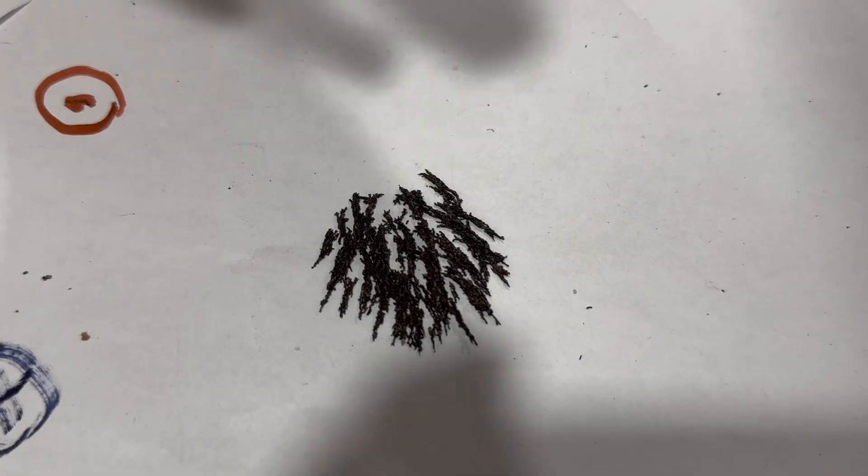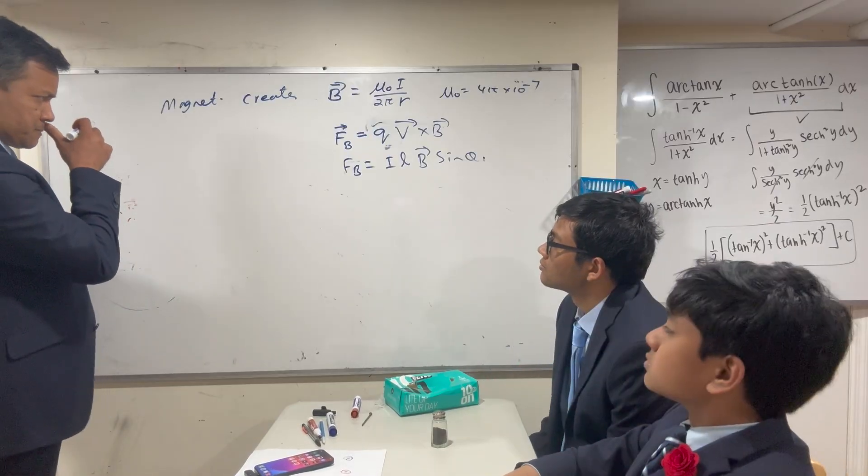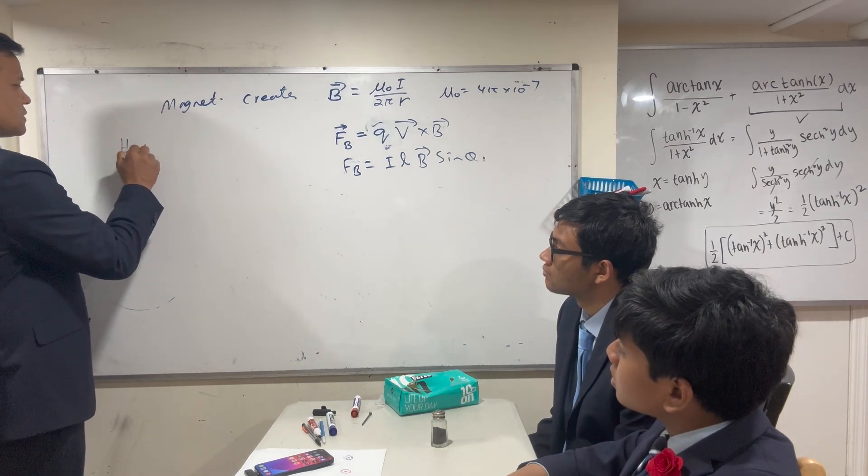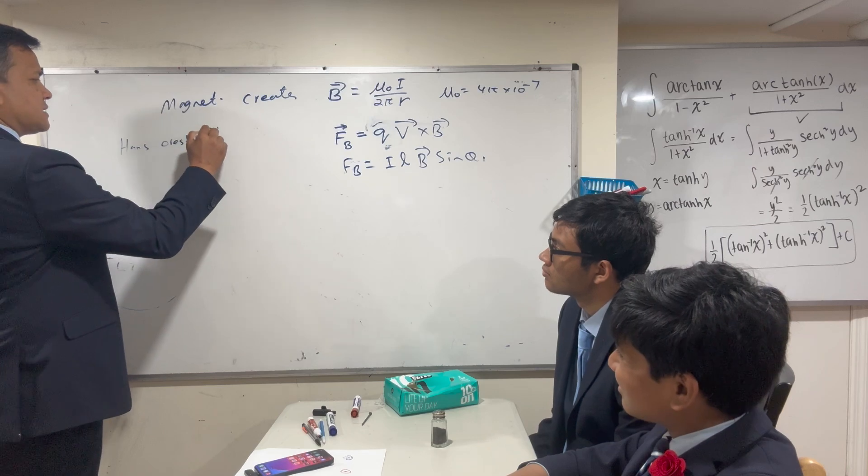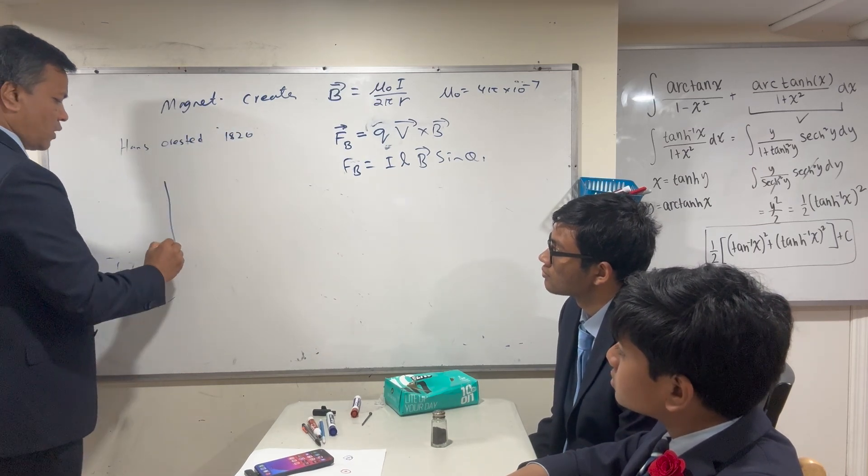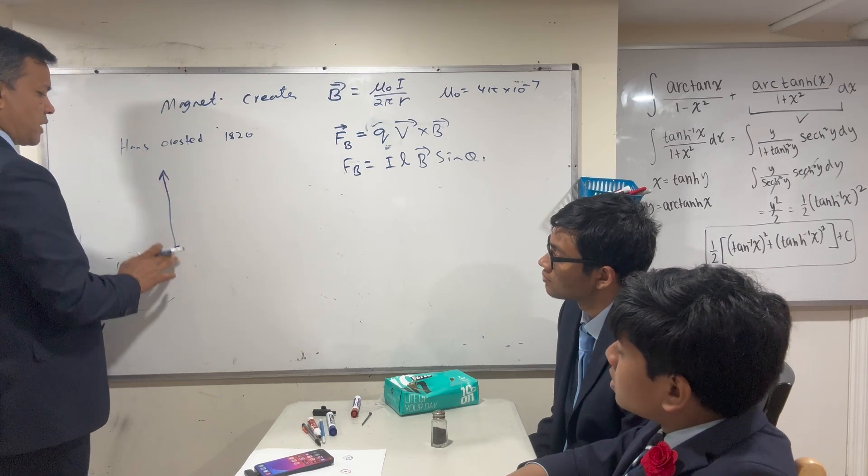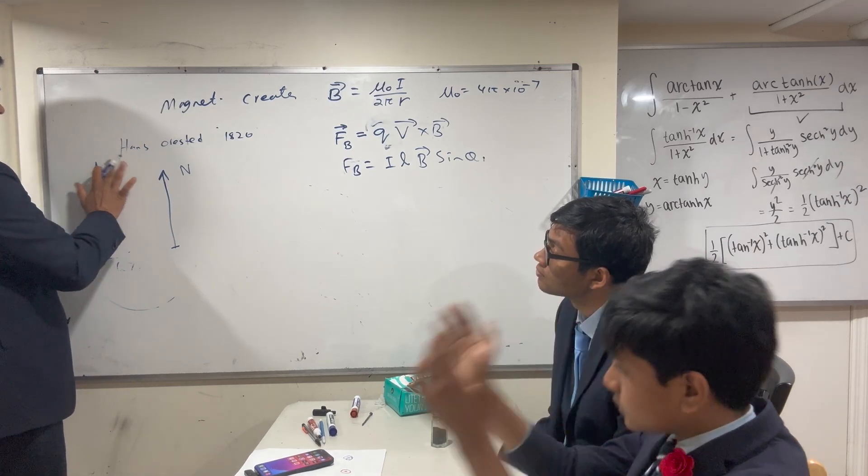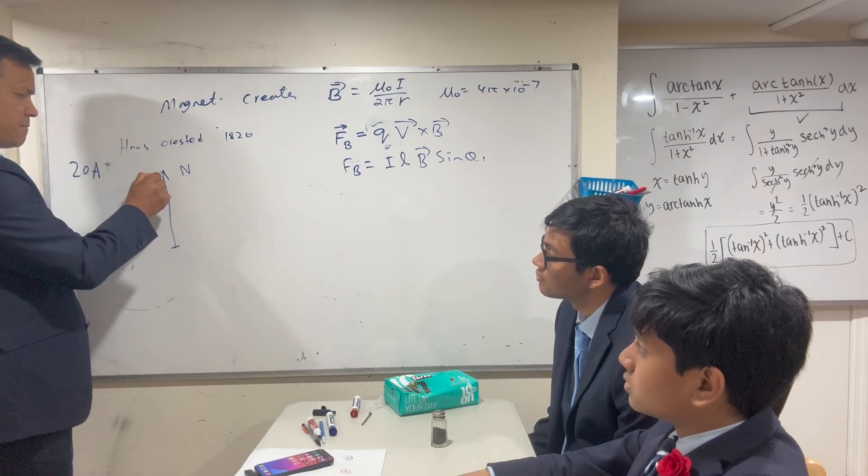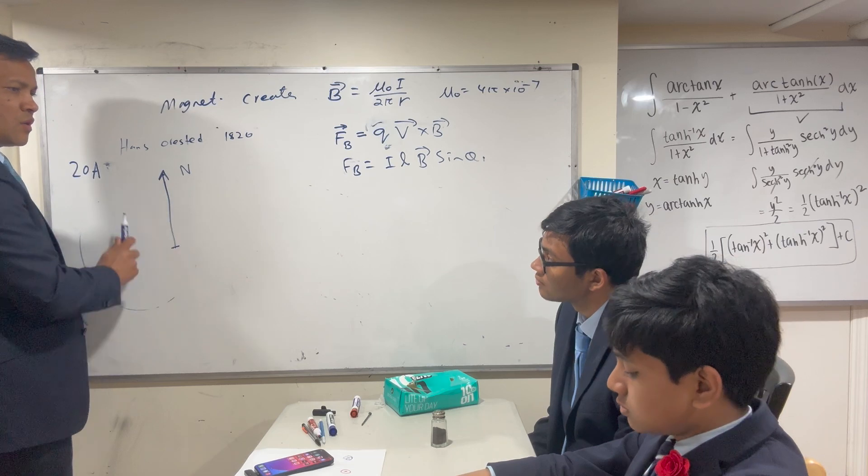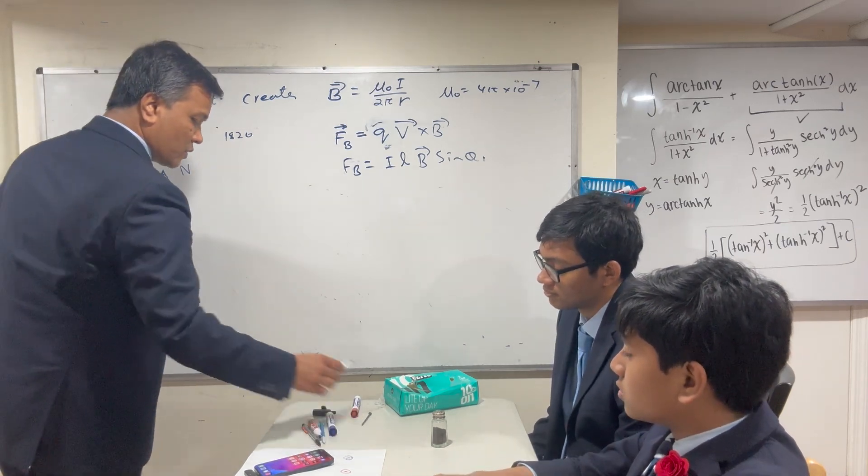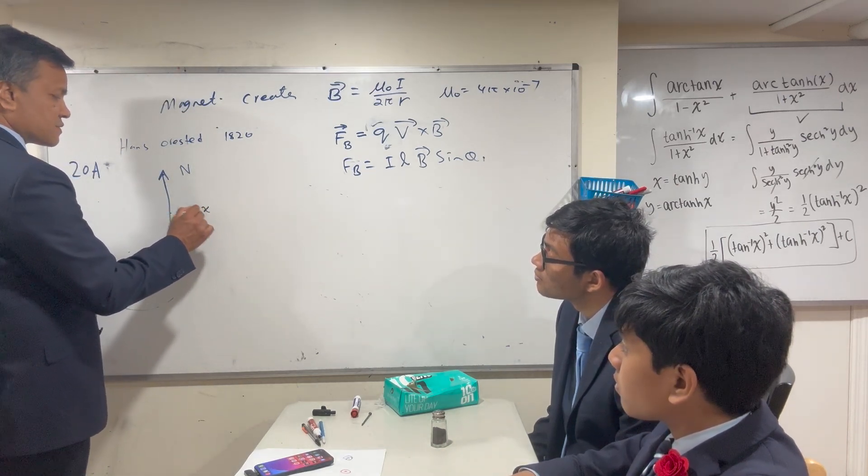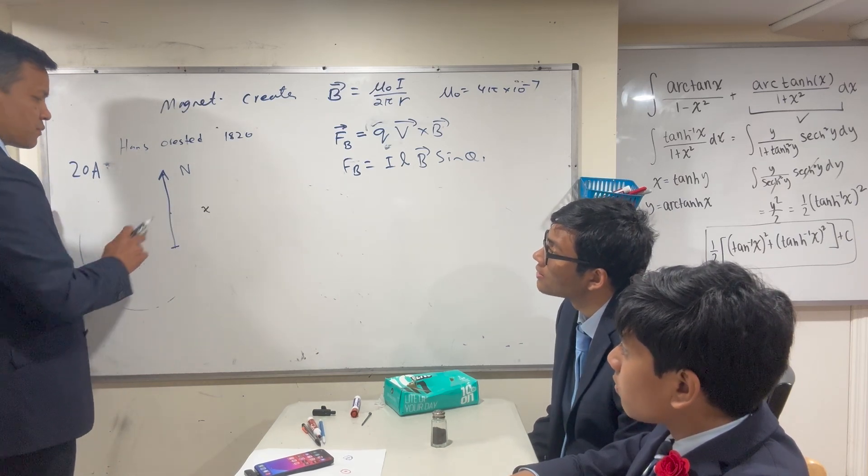Let's talk about the magnetic field. Oersted, 1820. What did he discover? A current-carrying wire—let's say the wire carries 20 amps—creates a magnetic field around the wire. We're going to try to find the magnetic field at distance from the wire.